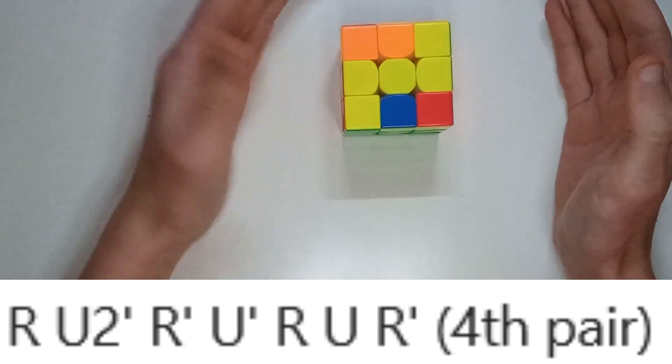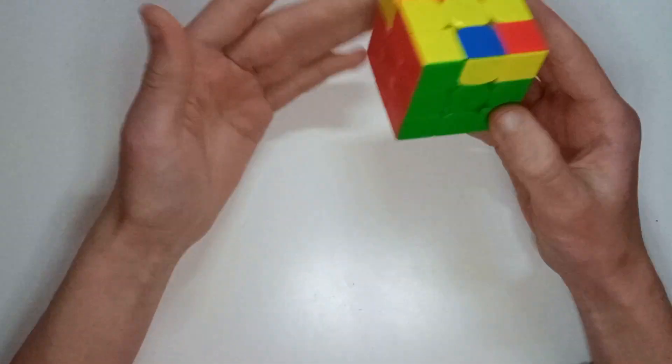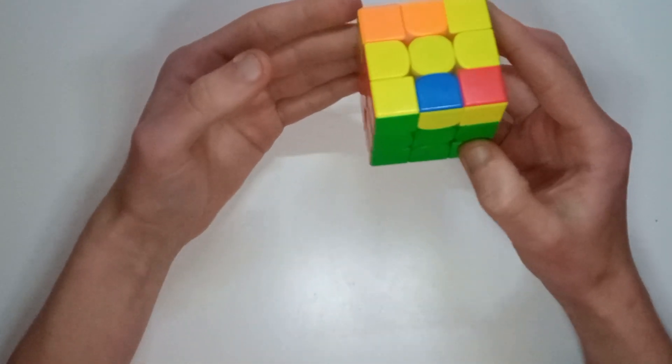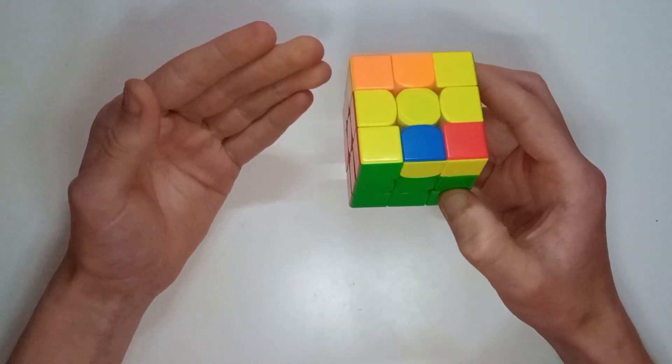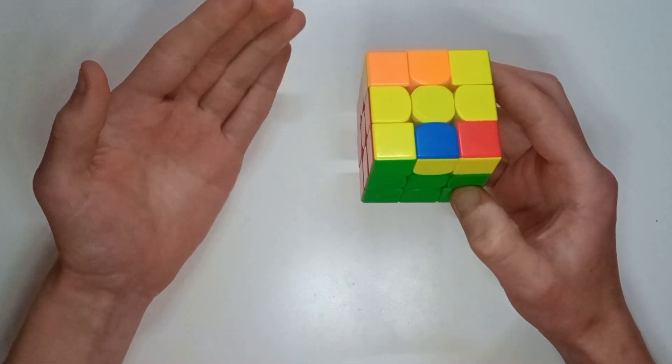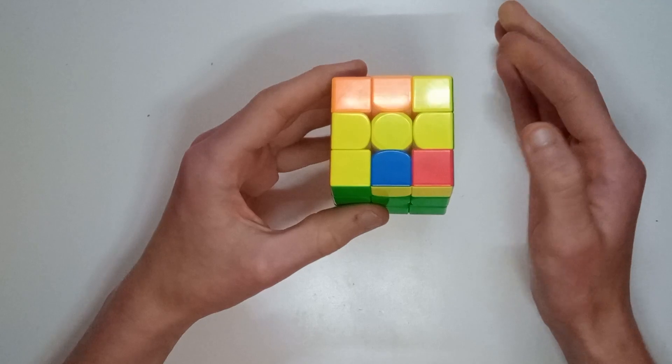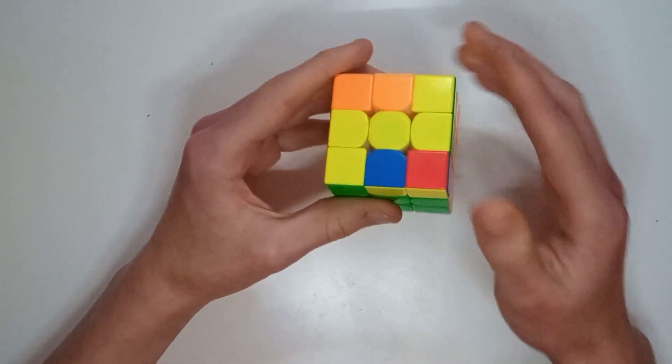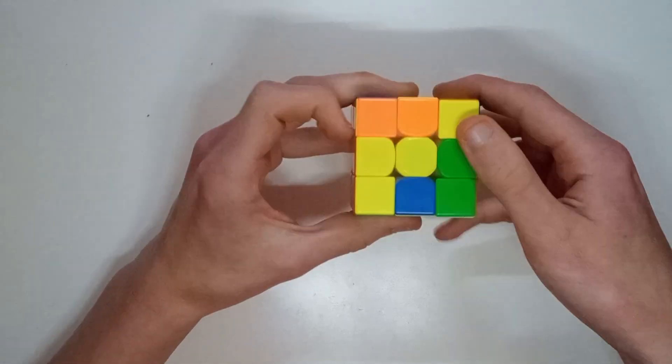And then apparently this is an OLL CP that he did to finish it off. I don't know if he knew he was going to get a PLL skip. I think there's a reasonable chance he did because to get a 3.75 surely he must have stopped the timer very quickly, there mustn't have been any messing around with that.